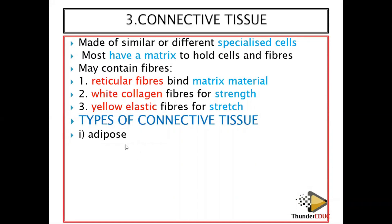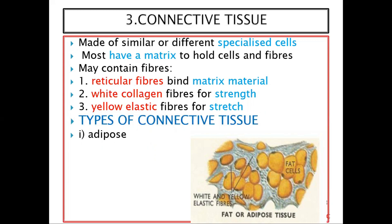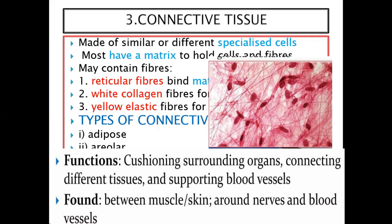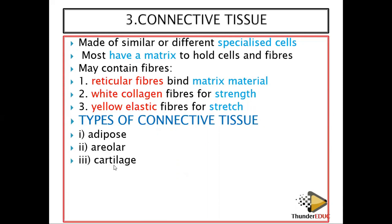Let's look at the different types of connective tissue. Number one, we have adipose tissue — this is like fat, and if you are large it means you have a lot of adipose tissue. Number two, areolar tissue fills up the spaces in the body. Number three, we have cartilage. If you touch your ear and feel it as you go up, those fibers you feel are an example of cartilage.